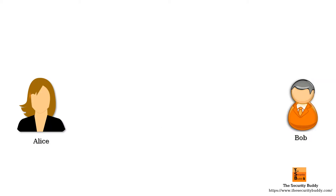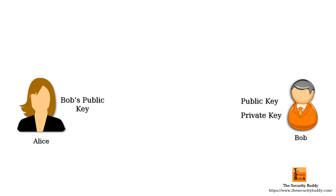Let's say Alice wants to send an encrypted message to Bob. In order to do so, Bob firstly needs to generate an RSA key pair that consists of a private key and a public key. Bob then needs to share his public key with Alice. Please note that the private key must be kept secret and should never be shared.